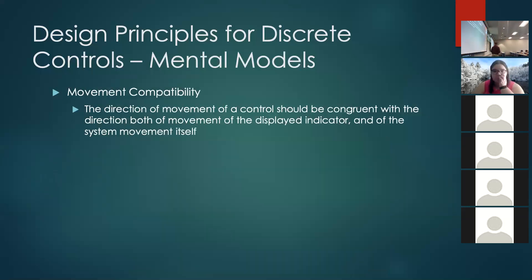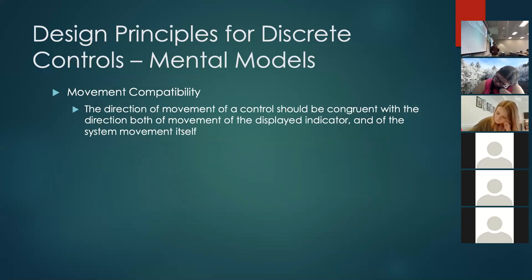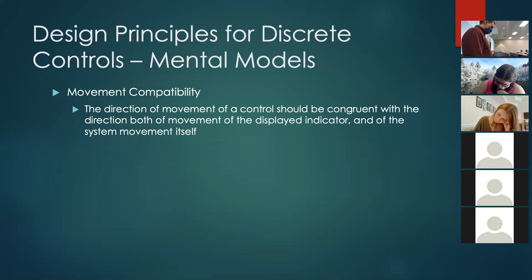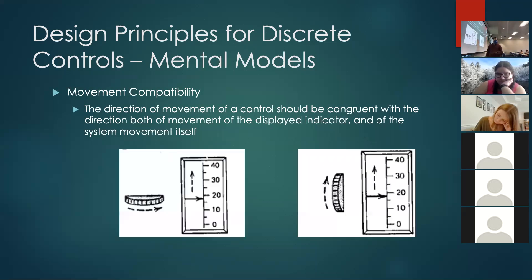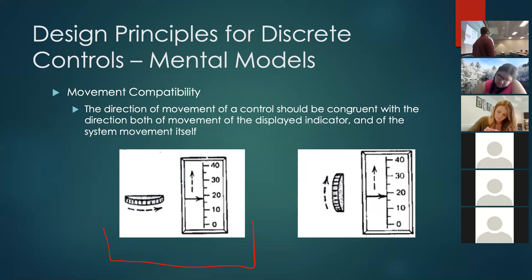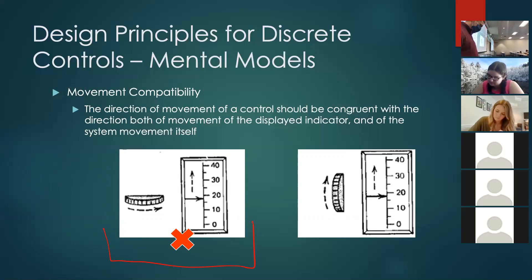In addition to compatibility of location, we have compatibility of movement: the direction of movement of a control should correspond — be congruent — with the direction of movement of what it's controlling or the display indicator. You never want something like rotating a dial left and right to move something up and down — that requires a mental rotation for users, which is ill-advised. On the other hand, when you move the wheel up and the indicator goes up, that's intuitive.